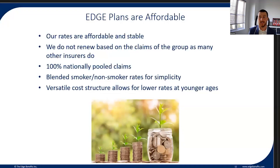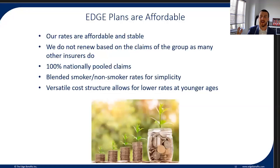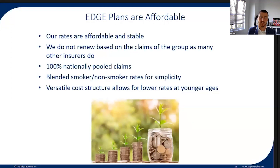Part of the affordability is that our rates are very stable and tend to have the lowest renewals in the industry on products that renew annually, like our health and dental policy. We don't renew on the claims of a group — rather than assessing a new price based on that association's claims experience, we look at 100% nationally pooled claims, where everybody across the country is treated as one big group on an annual basis.